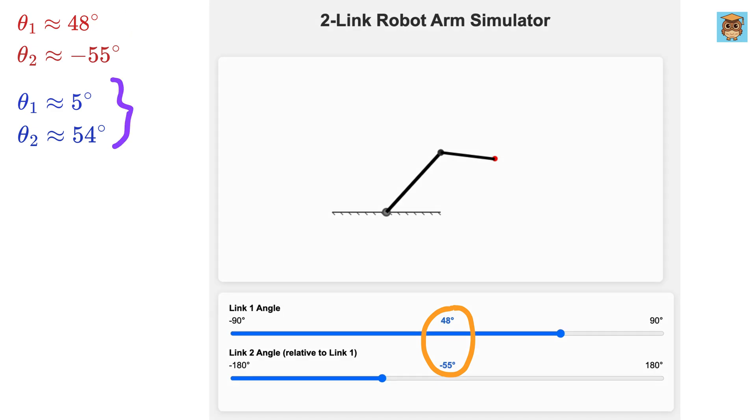Now let us also check for solution 2. Let me bring the link one angle to 5 degrees, and link 2 to 54 degrees, and there we go. The end effector again reaches the same target.